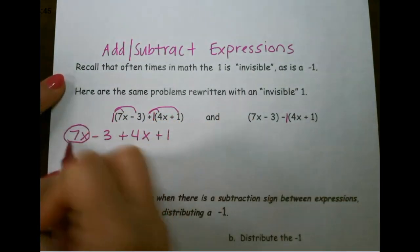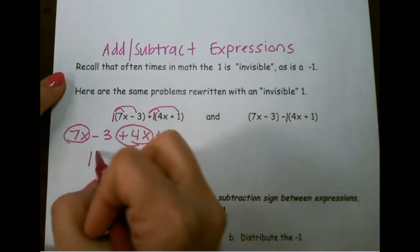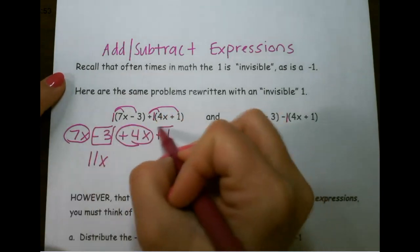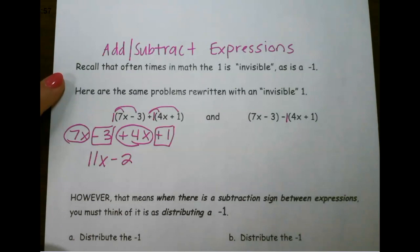From here, we combine like terms. 7x and 4x would give me 11x. Negative 3 and positive 1 would give me negative 2. So that would be our answer for that one.